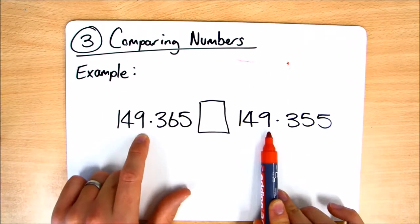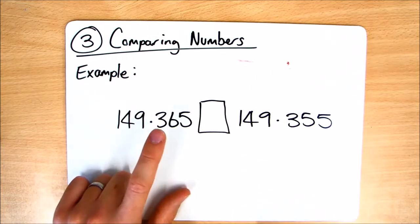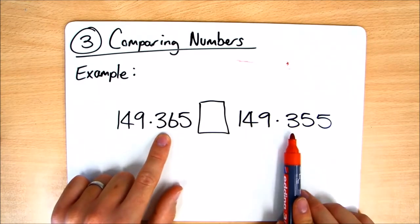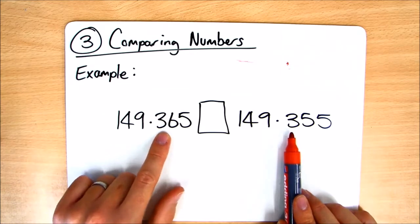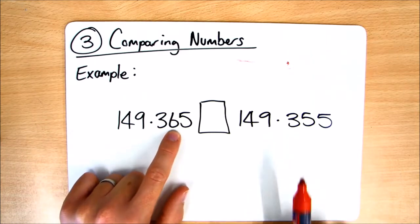So we'll keep going. This time we'll go past the decimal point. There's three in the tenths here and three in the tenths here. So we'll keep going. This time there's six in the hundreds and five in the hundreds.